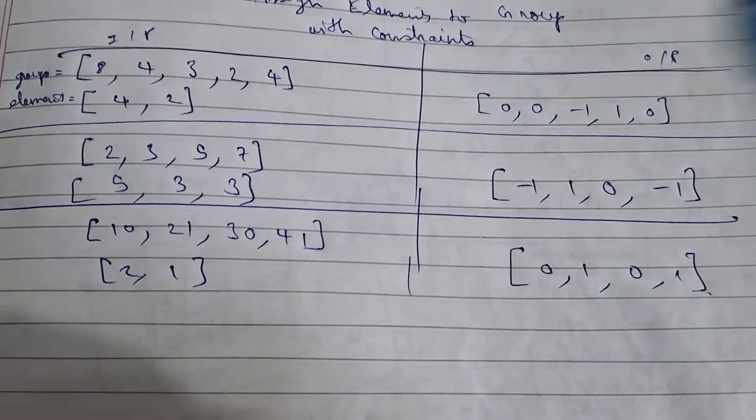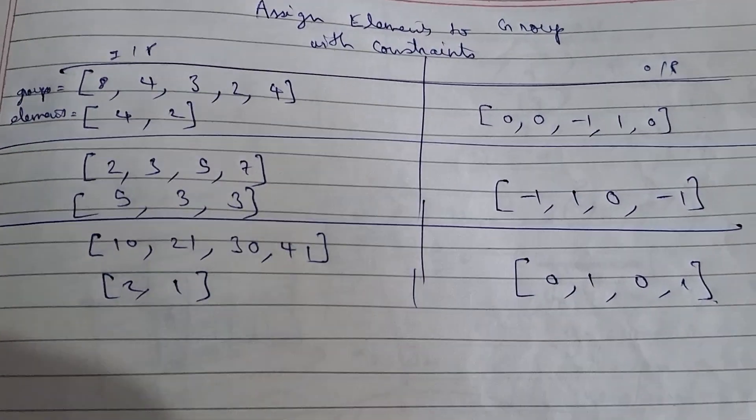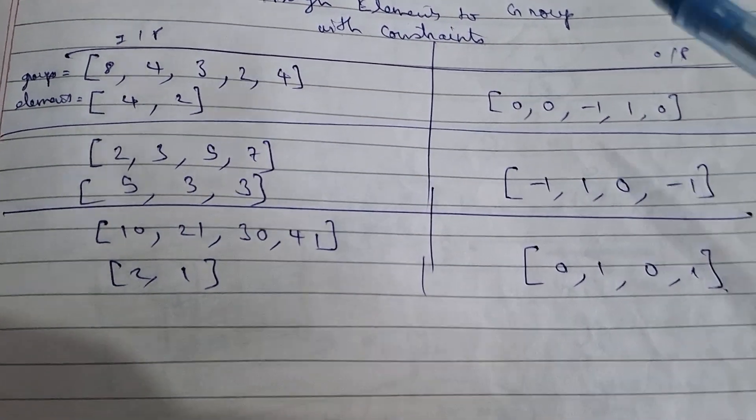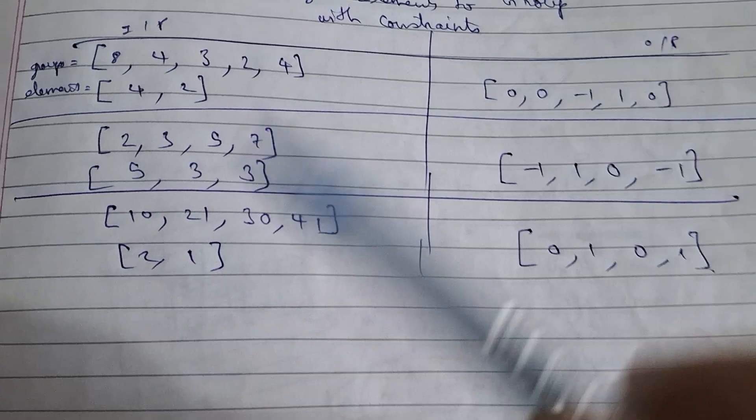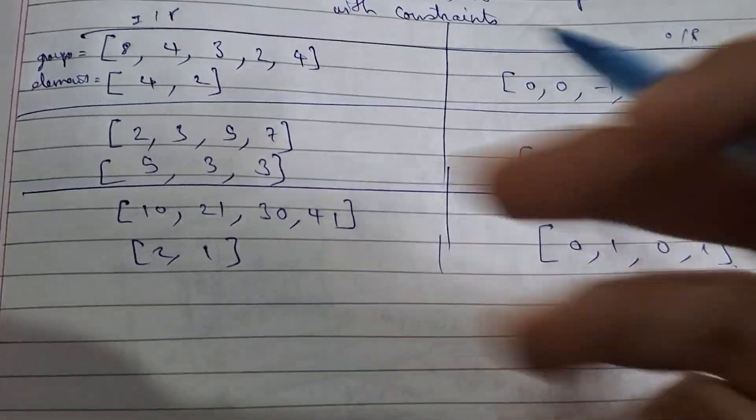In this video I'm going to discuss the assign elements to group with constraints problem which occurs in today's LeetCode challenge. If you have any doubt regarding this, you can ping me up on Instagram or join my Discord server. I'll provide both links in the comment section. The problem statement is very simple: you are given two arrays or vectors, one is the groups and other is the elements.